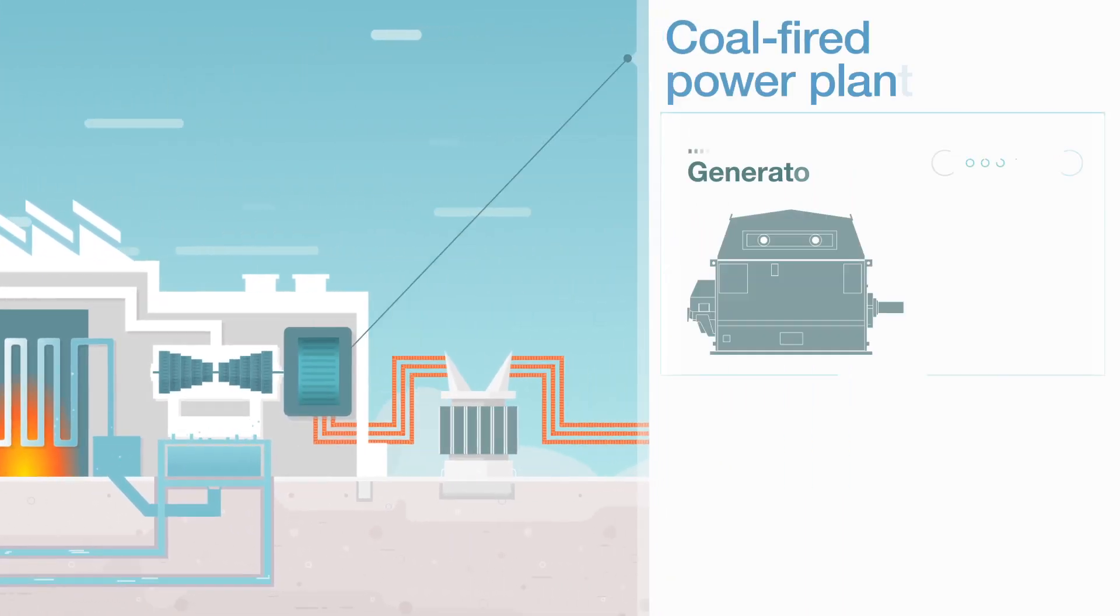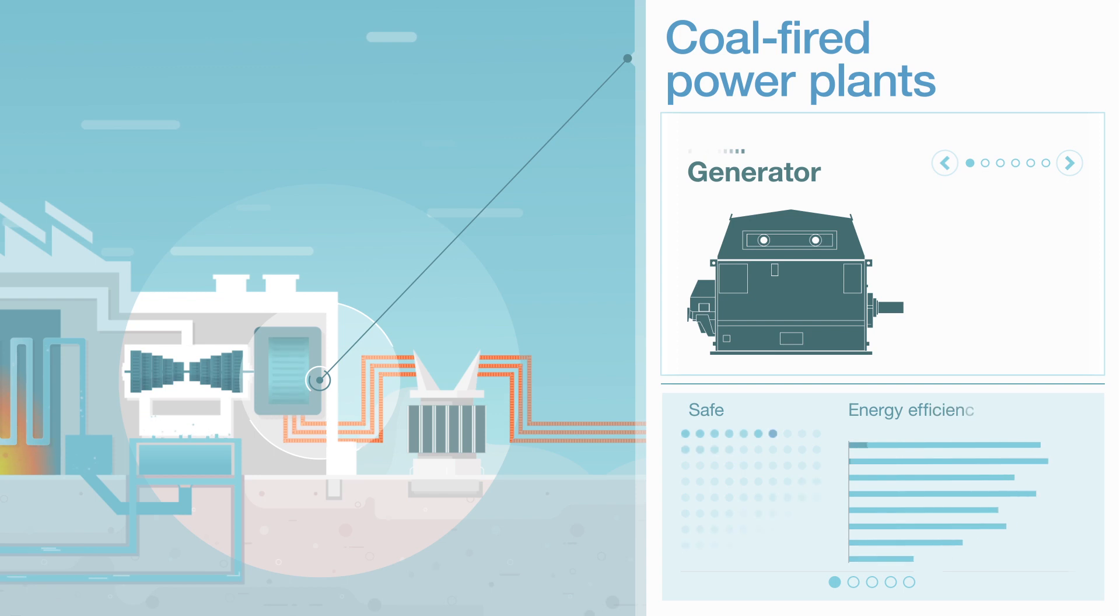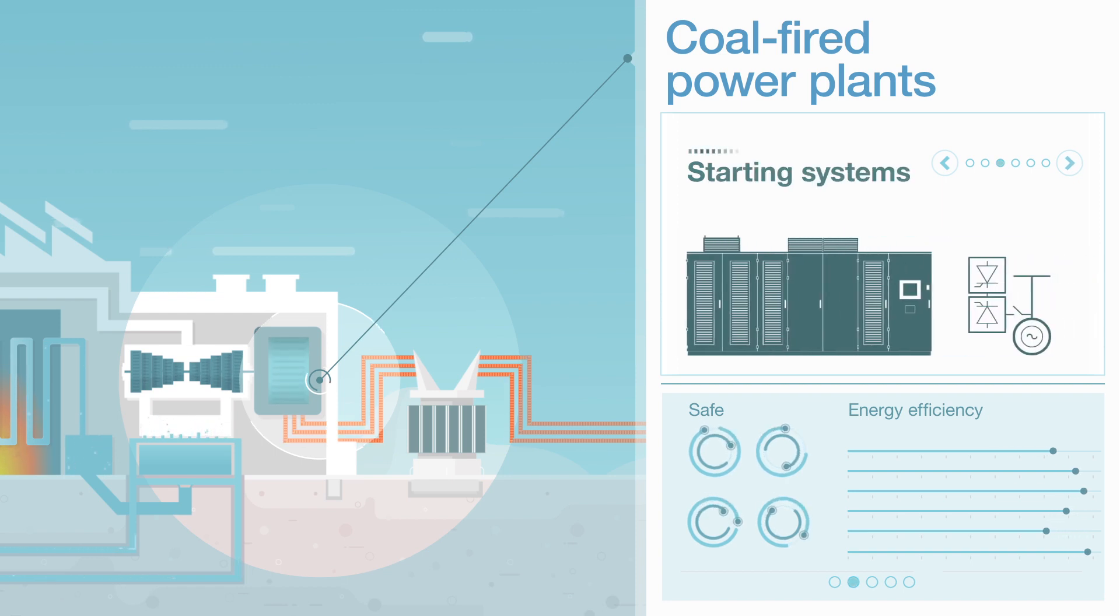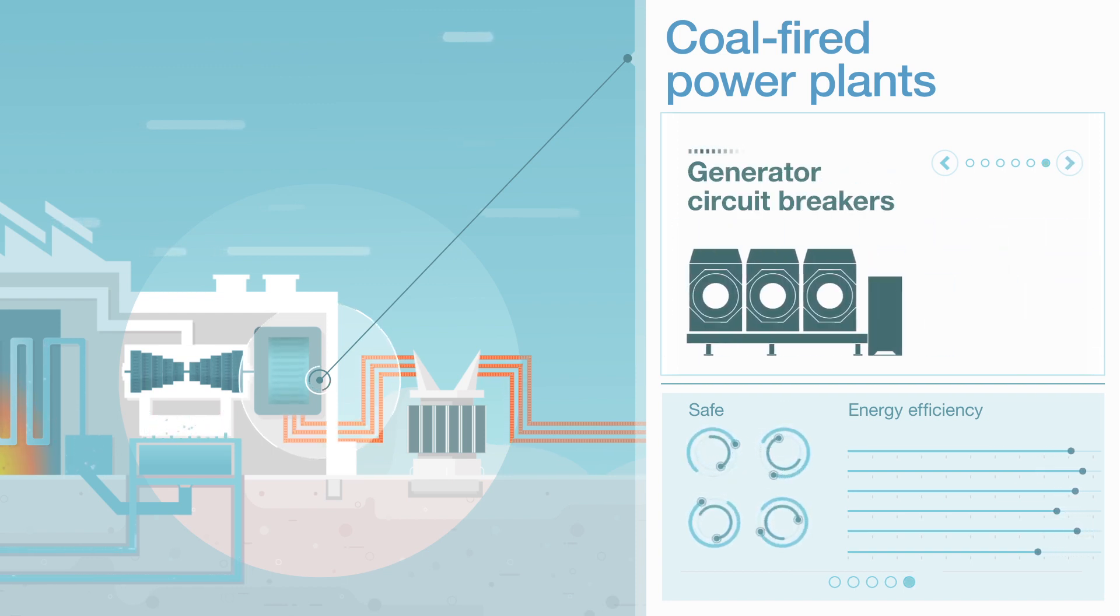The generator is the heart of the power plant. Reliable, safe and energy-efficient performance is key. ABB's products are designed for just that: generator protection and control solutions, such as generator starting and excitation systems, synchronization systems, switchgear, and generator circuit breakers.